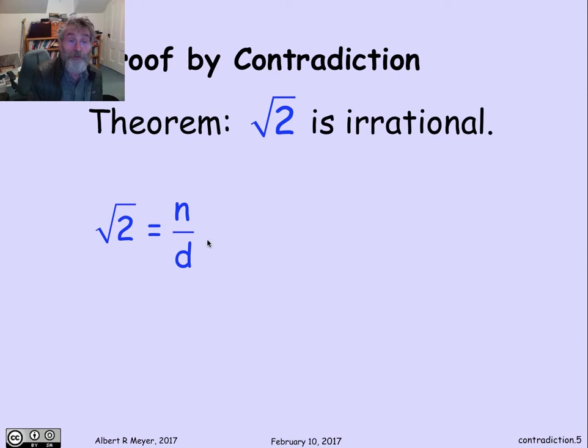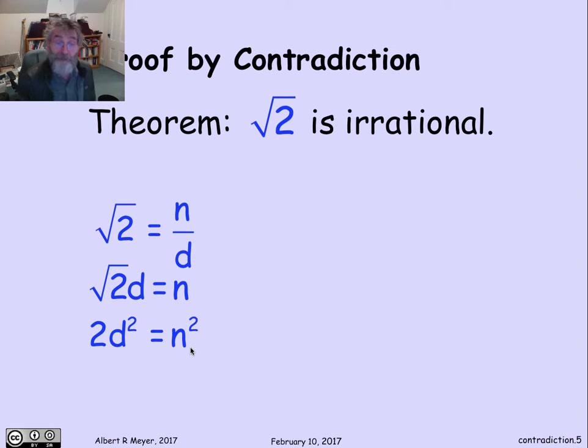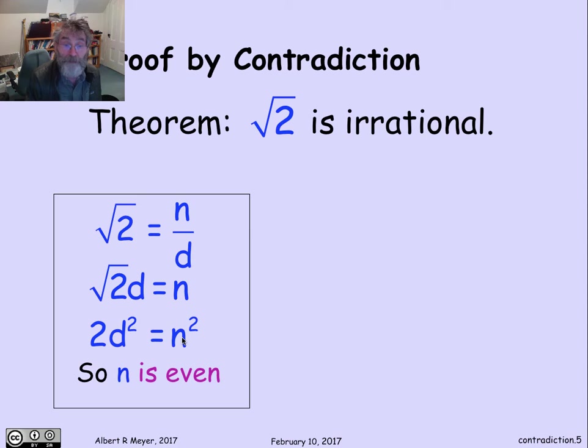So I've got square root of two is n over d. Let's start simplifying. Get rid of the denominator d, multiply across. So I have square root of two times d is equal to n. Now we can clean this up by squaring both sides to get rid of the square root of two. So I get 2d squared is equal to n squared. Well, what that tells me is that n squared is even. Definition of even is that it's a multiple of two. So if n squared is even, that means n has to be even. And I'm halfway there. So n is even.